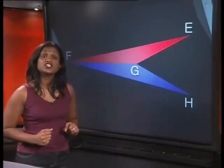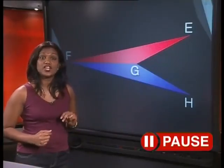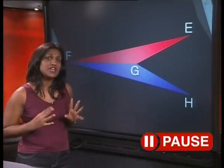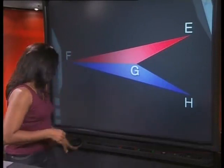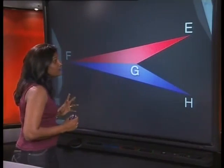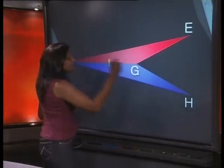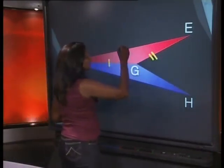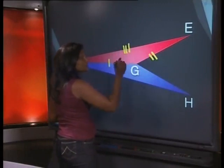By the definition of a kite, two pairs of adjacent sides must be equal. Now does our shape fit the definition? Let's put in all our markings from before. We know that this side was not equal to this side was not equal to this side because it was a scalene triangle.